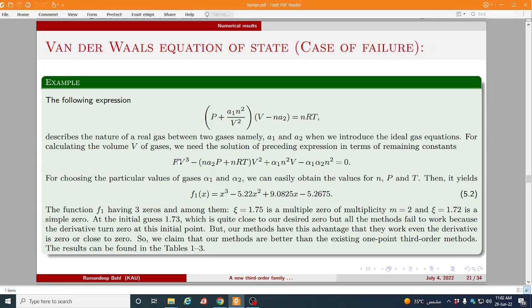So first of all we use Van der Waals equation of a state in the case of failure. As you can see here, this equation by using the value of this parameter p and all we will get this equation clearly in f1. This is the root ξ is equal to 1.75 with the multiplicity m is equal to 3. So whenever we choose initial guess 1.73 so the derivative will be close to zero.